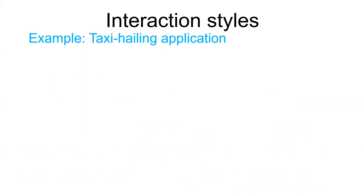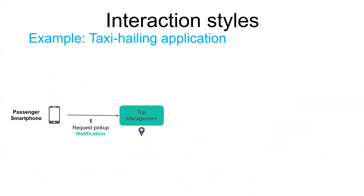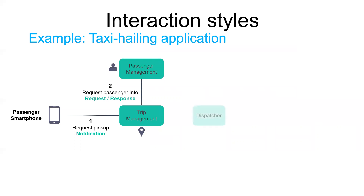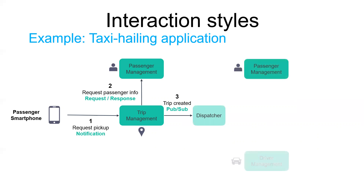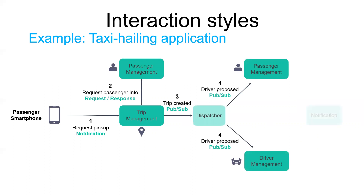In real-world cases, a service uses a combination of these interaction styles. For example, in an Uber-like application: when the user requests a trip, the passenger smartphone sends a notification to the trip management service to request a pickup. The trip management service then verifies that the passenger account is active by using request/response to invoke the passenger management service. After that, it sends a notification to a dispatcher telling him the trip was created. The dispatcher publishes that a driver is proposed, and both the passenger management service and the driver management service use a notification service to notify the passenger.